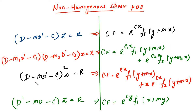The third case is: suppose the same factor is coming twice. That means you have to write this formula: e power Cx times f1 of y plus mx, plus x times e power Cx times f2 of y plus mx.